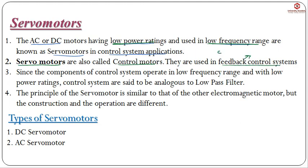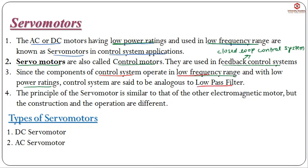Feedback control system means they are used in closed loop control system. Since the components of the control system operate in the low frequency range and with low power rating, control systems are said to be analogous to a low pass filter. Servo motors operate in low frequency range and with low power rating, that is why it is known as a low pass filter.